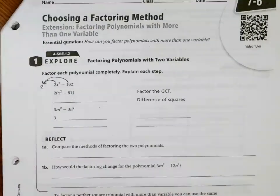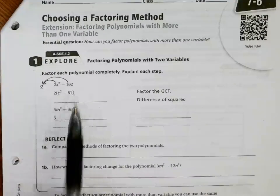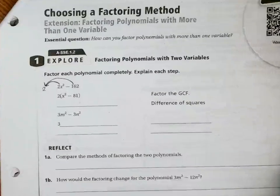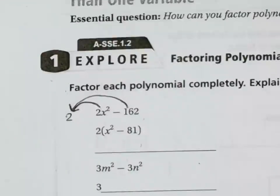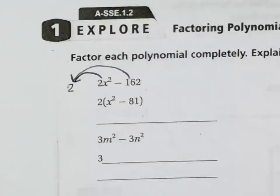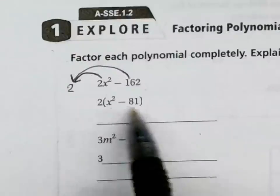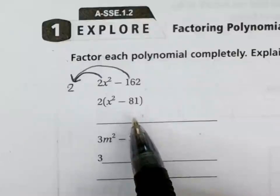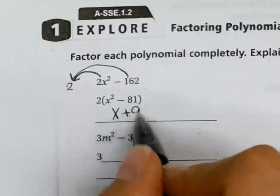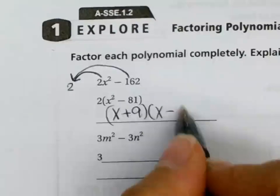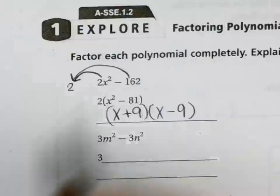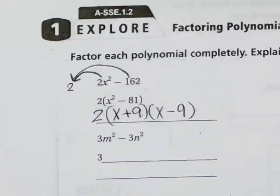And then now, do you guys notice anything? Can I do anything else? What is this right here? Difference of squares, right? So x squared minus 81 is the same thing as x plus 9 times x minus 9, because 9 squared is 81 and x squared is x squared. Bring down that 2. So we have 2 times x plus 9 times x minus 9. That's your difference of squares.